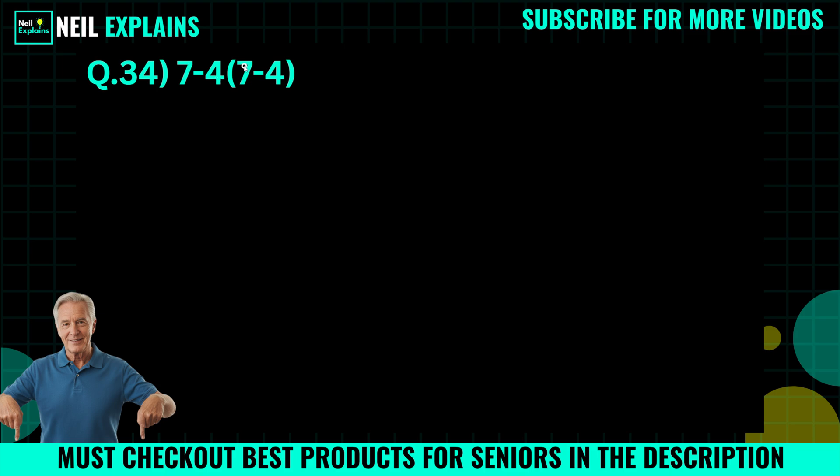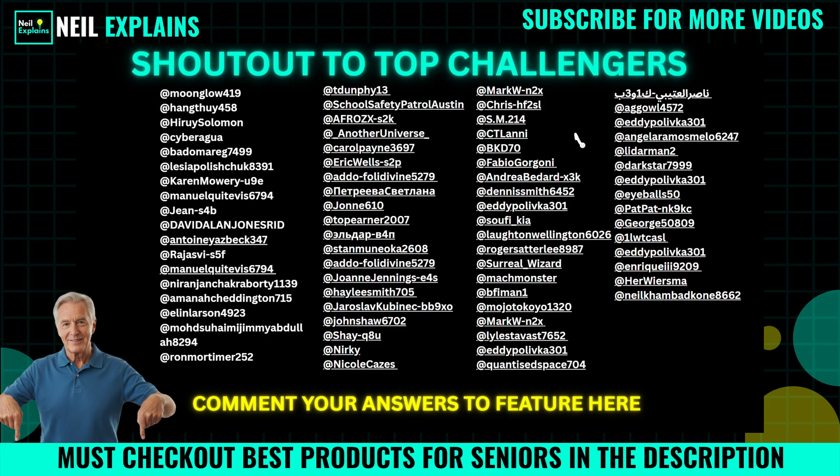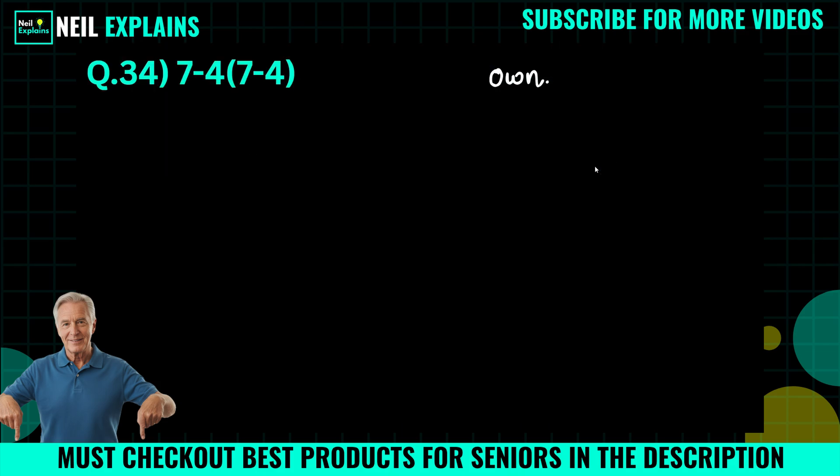7 minus 4 times 7 minus 4. Try to solve on your own and comment your answer to get featured. In our shoutout, we will solve this question with the help of PEMDAS and stepwise map so everybody will understand how it's going on.